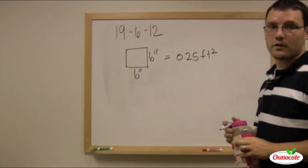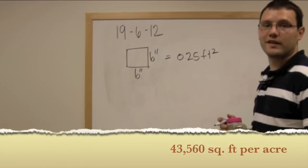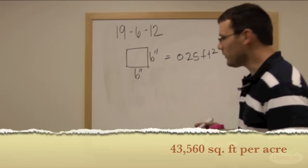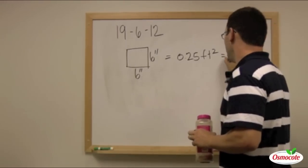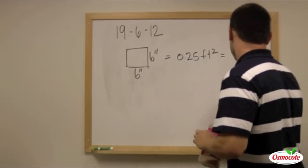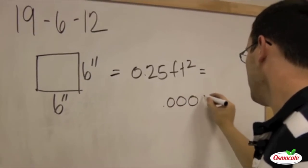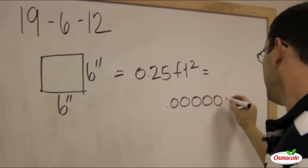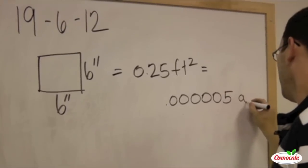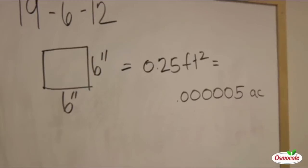And there's 43,560 square feet per acre, which means that we have a very small amount of acres. We have 0.000005 acres to fertilize in this example.